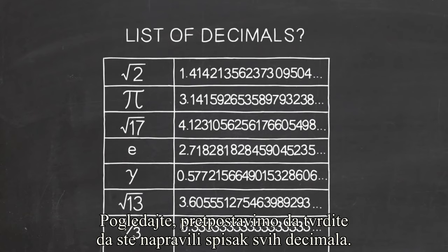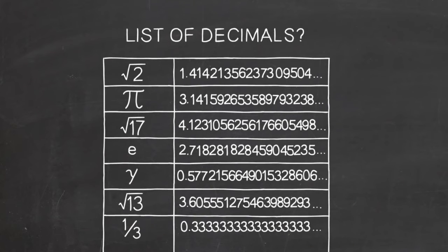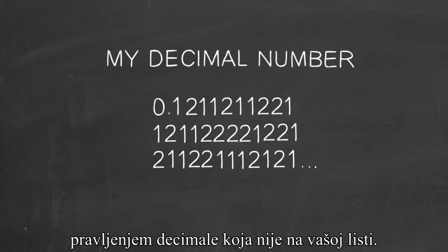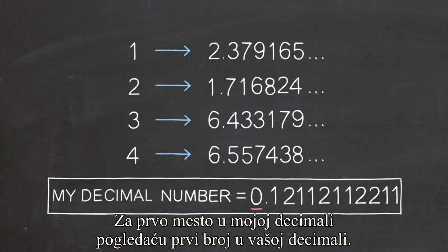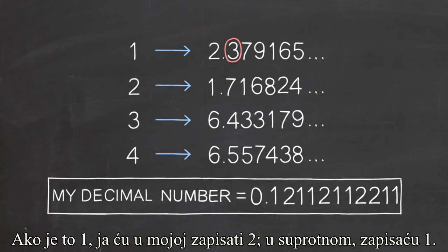Look, suppose you claim you have made a list of all the decimals. I'm going to show you that you didn't succeed by producing a decimal that's not on your list. I'll construct my decimal one place at a time. For the first decimal place of my number, I'll look at the first decimal place of your first number. If it's a 1, I'll make mine a 2. Otherwise, I'll make mine a 1.